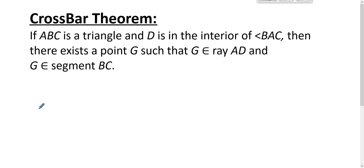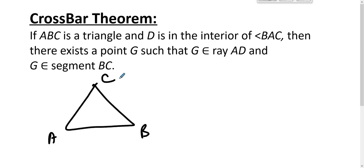So here's the theorem we use all the time — this is the crossbar theorem. We let triangle ABC be a triangle, and we let D be some point in the interior of angle BAC. Then there exists a point G such that G is on ray AD and also on segment BC. In other words, when you draw ray AD, that ray intersects segment BC. You have intuition that it should — you've drawn it a zillion times and it worked — but we haven't proven it.